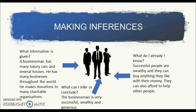So what do I already know? Successful people are actually wealthy and they can buy anything they like with their money. They can also afford to help other people. As for the conclusion, what can I infer from this picture? The businessman is very successful, wealthy, and generous. This is how you make inferences when looking at this photo.